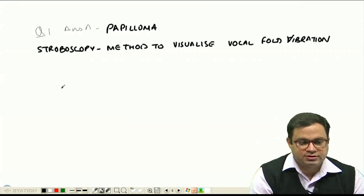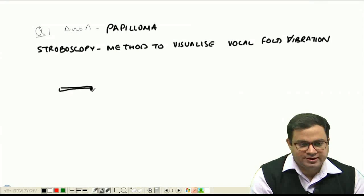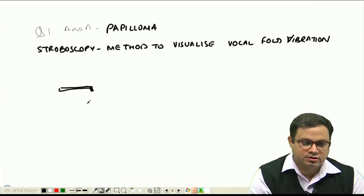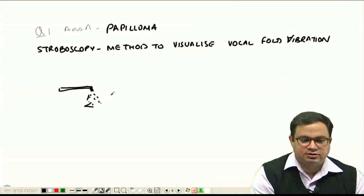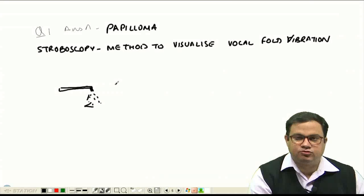cord vibration? What we do is we put a flickering light through a flexible or a rigid endoscope. Suppose here if the vocal cords of the patients are present, we throw a light. The light frequency